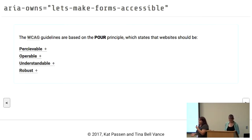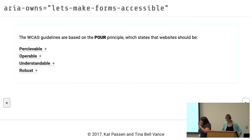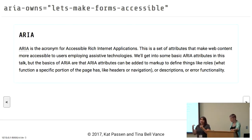Perceivable: can we see it, can we figure this out, can we perceive it? Operable: can we use it, can we navigate, can we get to the goal of the page or the app? Understandable: can users actually figure it out, or is it convoluted? And then Robust: how does it hold up? Robust also helps with cross-browser and cross-platform — how many people can use it, and does it require a specific browser or operating system?